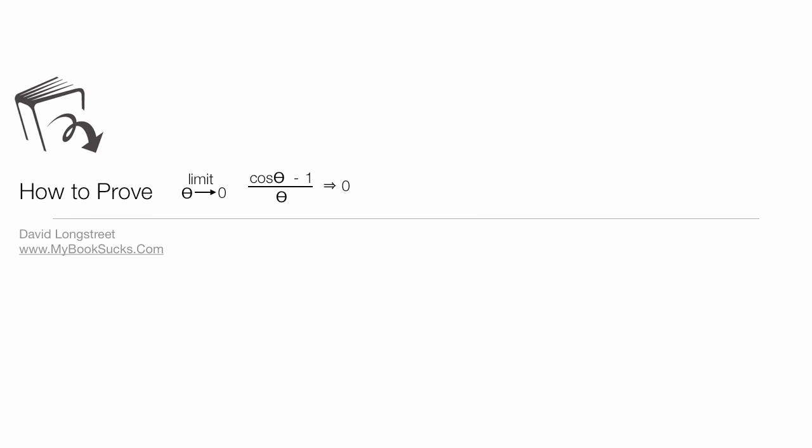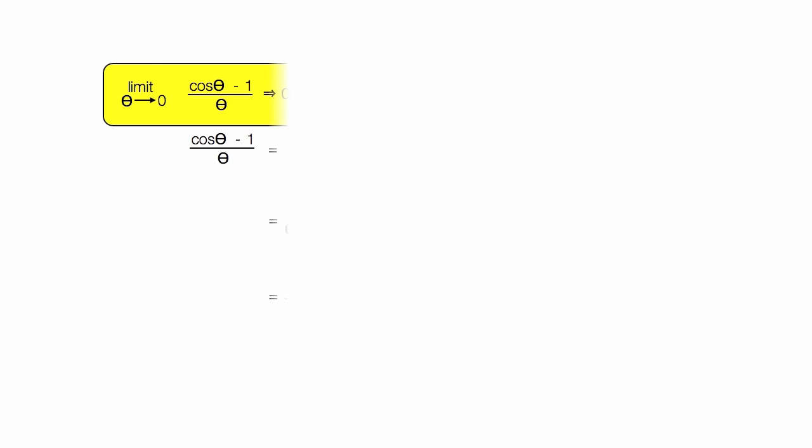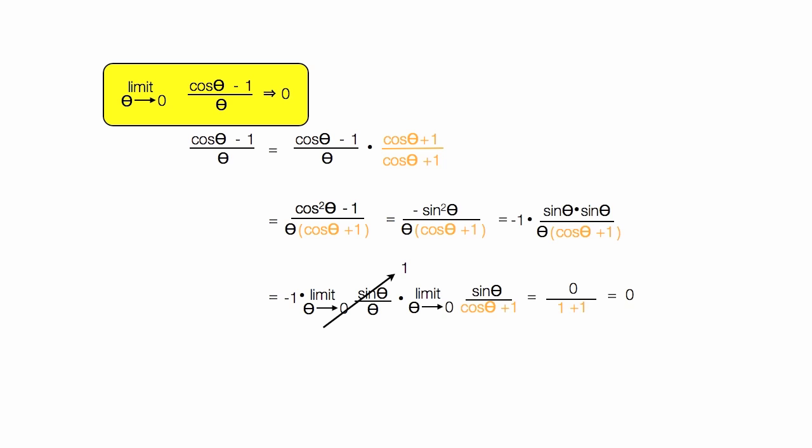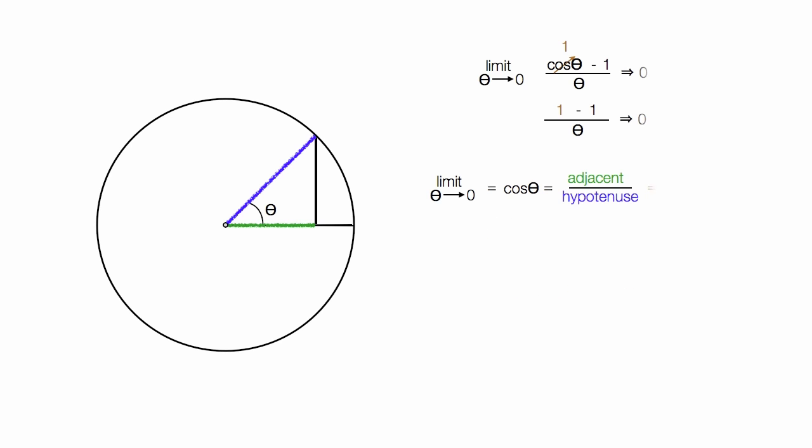In this tutorial, I'm going to show you how to prove that the limit of theta goes to zero of cosine theta minus one divided by theta goes to zero. I'm going to walk you through the long proof, and I'm also going to show you a visual proof with some animation to go with that.